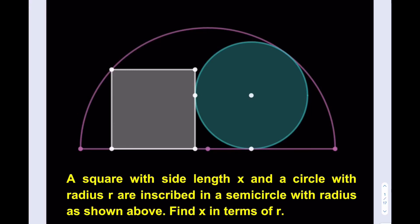Hello everyone. In this video, we're going to be solving a geometry puzzle. A square with side length x and a circle with radius r are inscribed in a semicircle with radius 1. The radius of the semicircle is 1. Find x in terms of r. You may want to pause the video and try this problem yourself first.